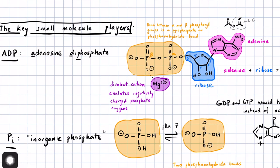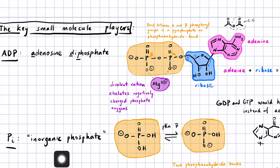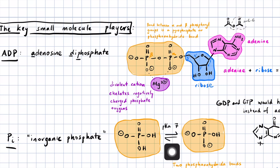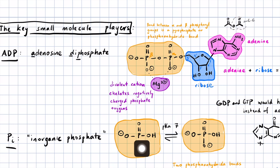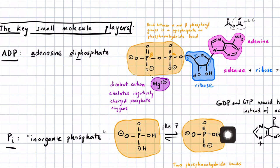Next we'll talk about inorganic phosphate. This is what your biochemistry and biology text calls basically the conjugate base of phosphoric acid. It doesn't have carbons in it, so they call it inorganic phosphate. At pH 7, two forms of phosphate are present in about equal amounts: the monoanion is in equilibrium with its conjugate base, the di-anion. The pKa is about 7, meaning at physiological pH it's a toss-up between either of these two structures.